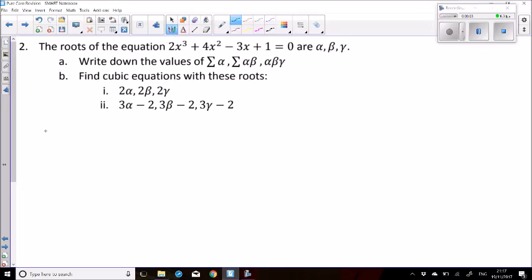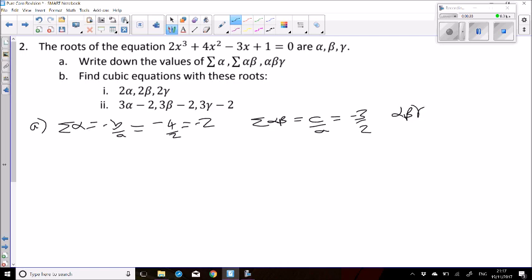Second question on roots starts off standard. The sum of alpha beta gamma is minus b over a, so that's negative 4 over 2, which is negative 2. Sum of the roots in pairs is c over a, so it's negative 3 over 2. And alpha beta gamma is negative d over a, which is negative half.